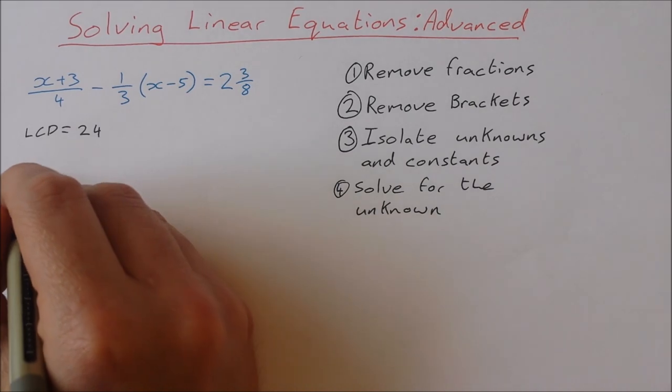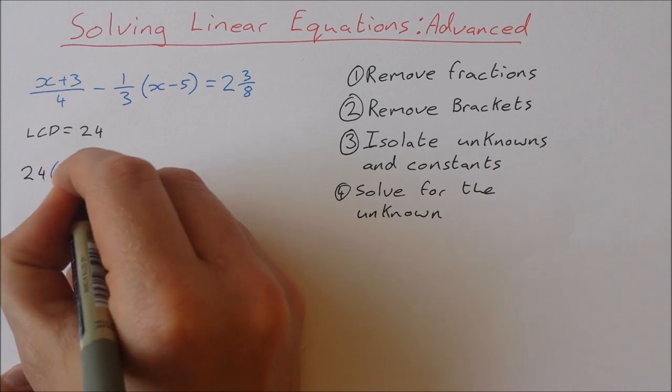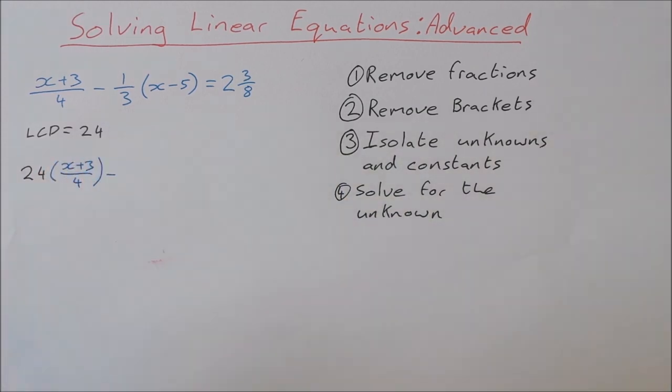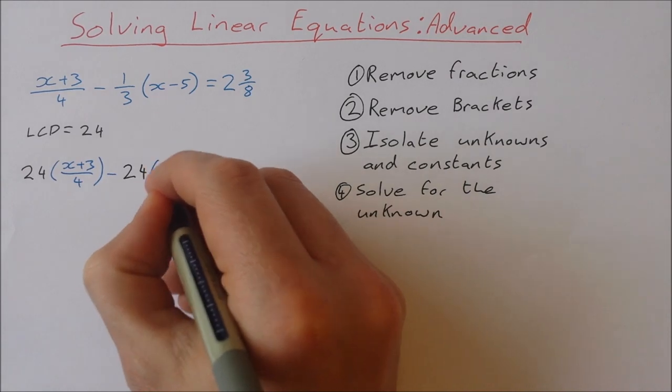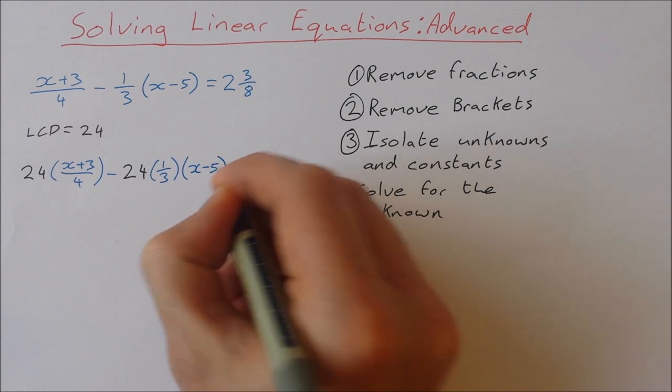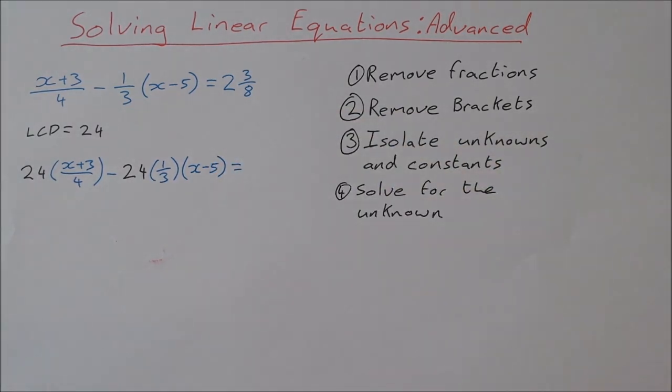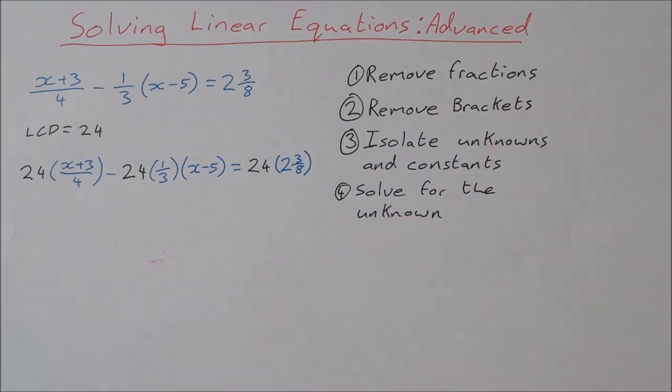So I'm going to multiply 24 by (x + 3)/4. I'm going to multiply 24 by 1/3(x - 5), and I'm going to multiply 24 by 2 3/8. Multiplying each term by 24 will get rid of the fractions and just make it that bit easier for us.